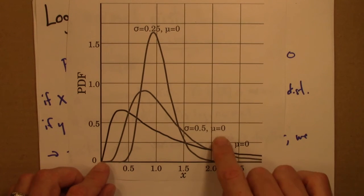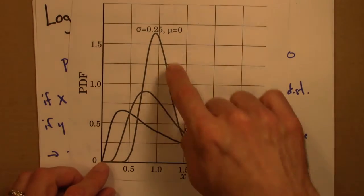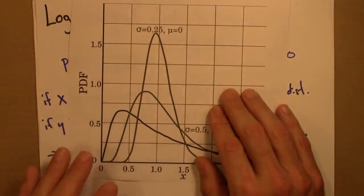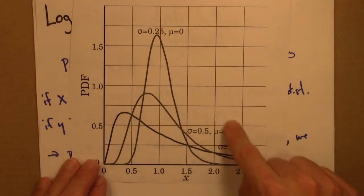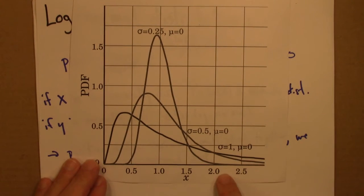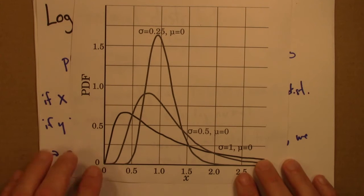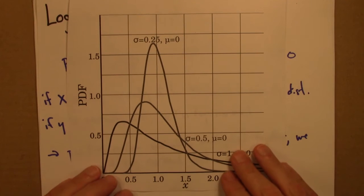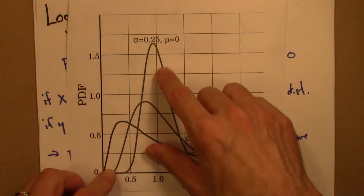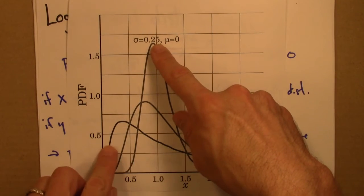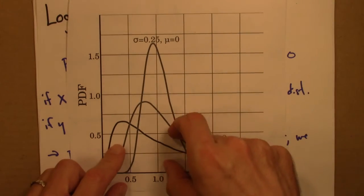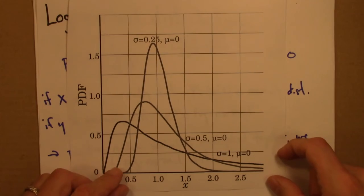And then mu, I guess these are all mu equals 0, but in general mu would shift this peak a little bit. But we're maybe going to focus on sigma. So this is a log-normal distribution, and they arise from multiplying random variables together. And there are these things with a peak, usually at a pretty small value, and then they stretch out in an asymmetric way off to the right.